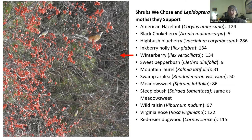These are the numbers of Lepidoptera that our chosen plants support. Highbush blueberry takes the prize with 286.